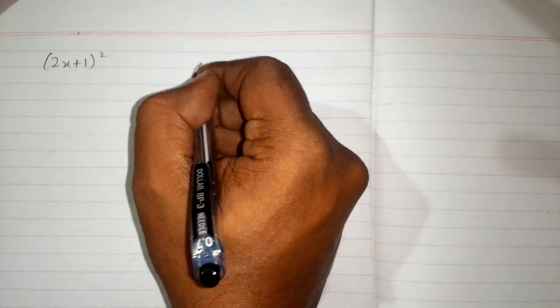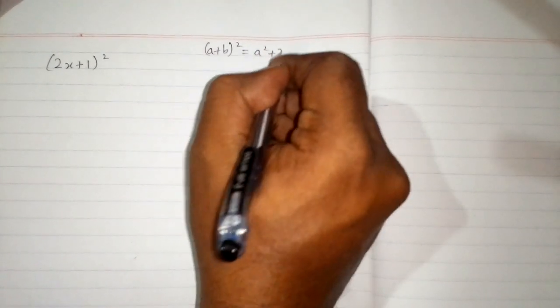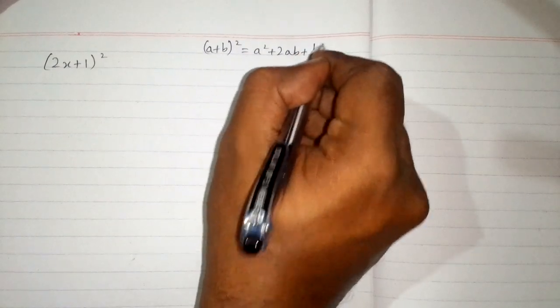In this video we will find the square of 2x plus 1. We will apply the formula (a+b)² = a² + 2ab + b².